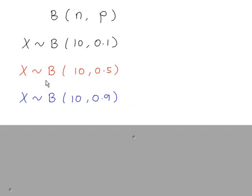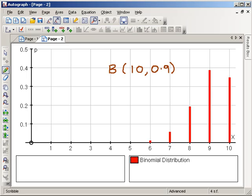And lastly, if the probability of success is high, so we have a 90% chance of success here, then the distribution looks like this.